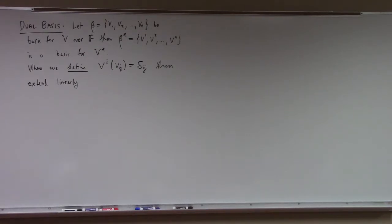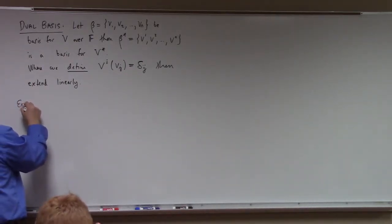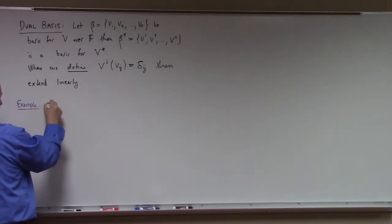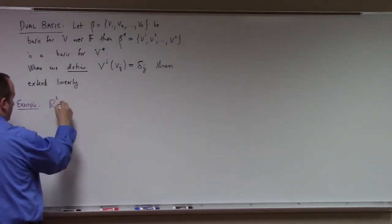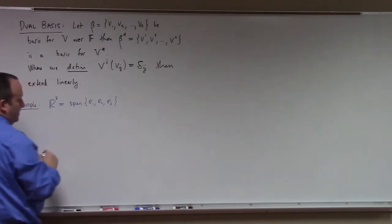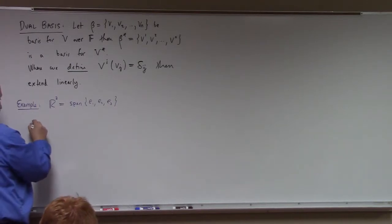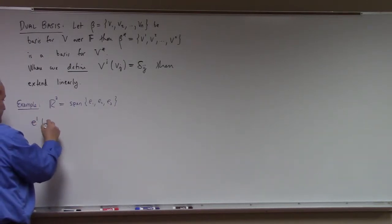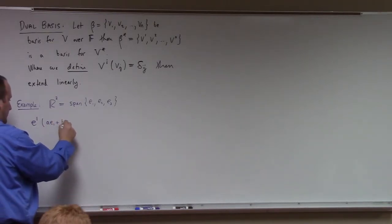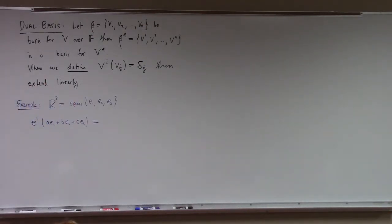Let me give you an example of this. So R^3 is the span of e₁, e₂, e₃. If I look at e^1 acting on a vector ae₁ + be₂ + ce₃, how does that work? e^1 is, by definition, a linear transformation on R^3, so I can pull out a, b, c and break up across addition. By construction it's a linear transformation. So I've got a·e^1(e₁) + b·e^1(e₂) + c·e^1(e₃).